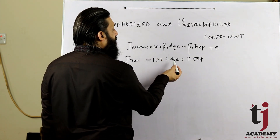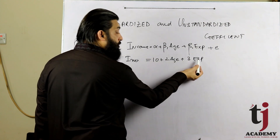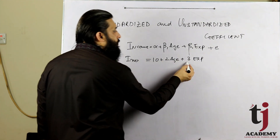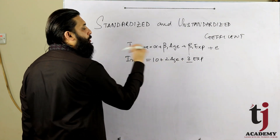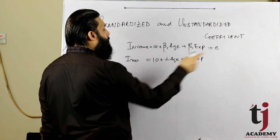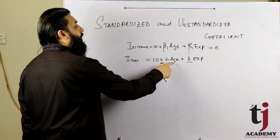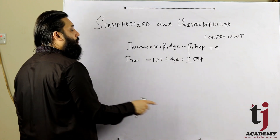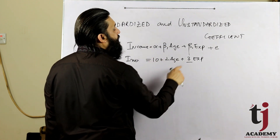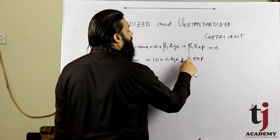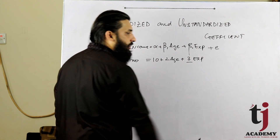Income is the dependent variable with age plus experience plus effect — you can expect three. Age is compared to experience: if experience increases by one unit, income increases by three units; if age increases by one unit, income increases by two units. So the coefficient for experience is more effective.